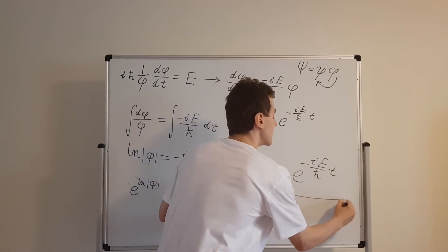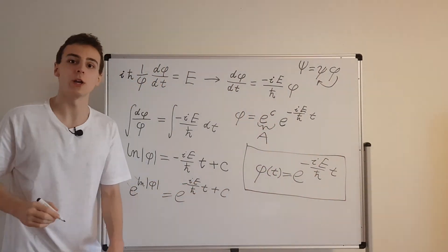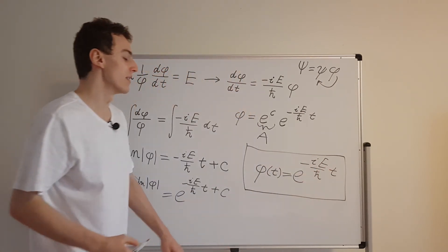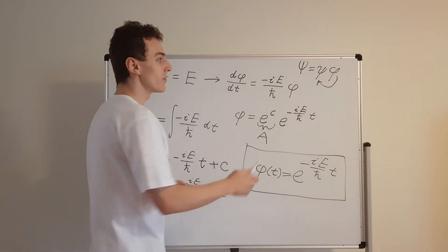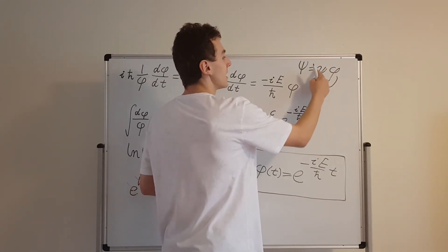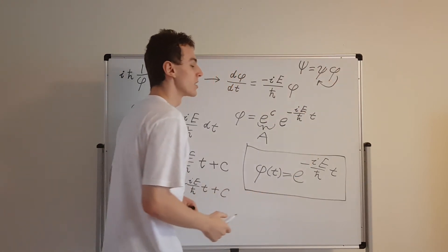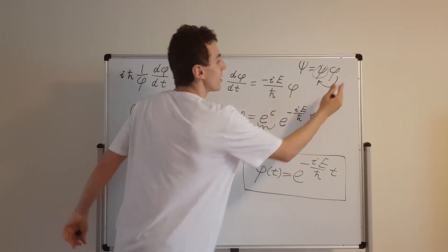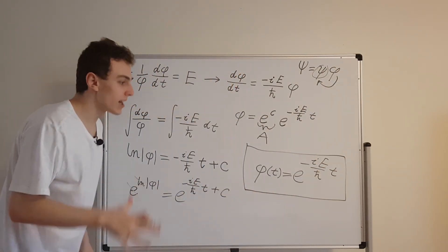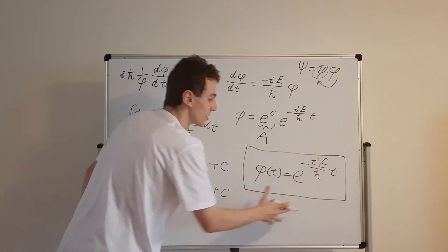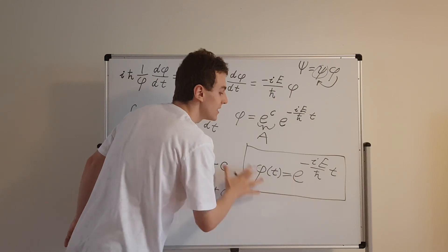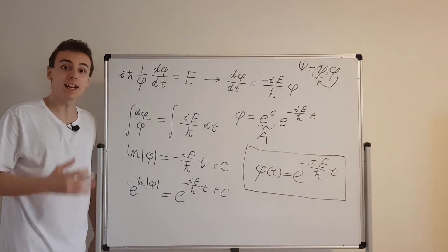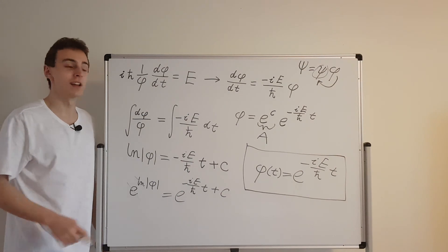This is the time dependence of each separable solution to the Schrödinger equation: an exponential with a negative imaginary factor in the exponent. The spatial functions ψ depend only on position, while φ depends only on time. In the next video, we'll find those spatial functions ψ and stitch them together with these φ's. That is the takeaway message of this video.